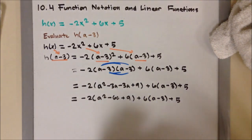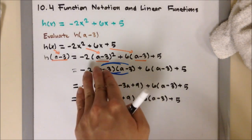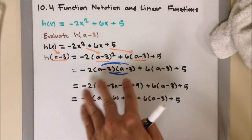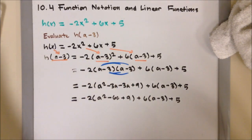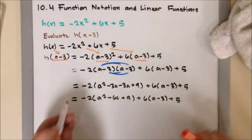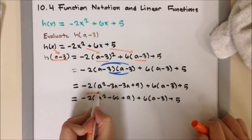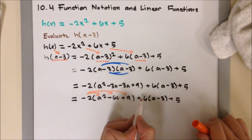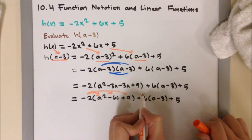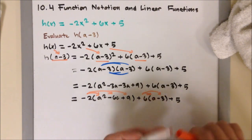Alright, so after I finish simplifying A minus 3 square or basically FOILing or using the box method A minus 3 times A minus 3. Next, I'm going to distribute the number that's outside the parenthesis. So negative 2 on the A square minus 6A and the plus 9 over here. Distributing the plus 6 on the A and the minus 3.